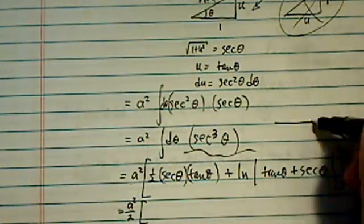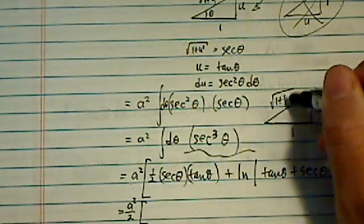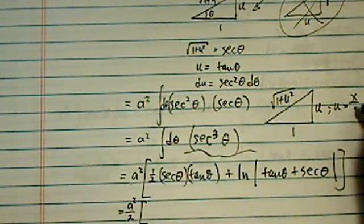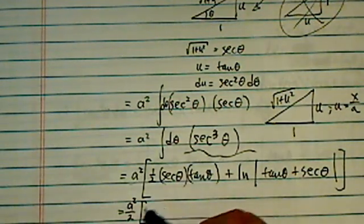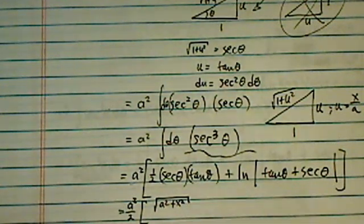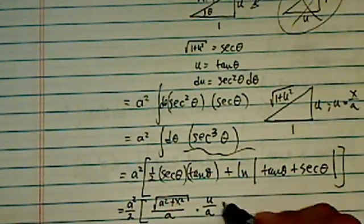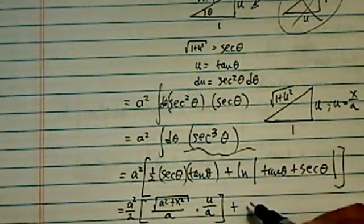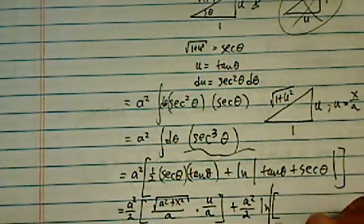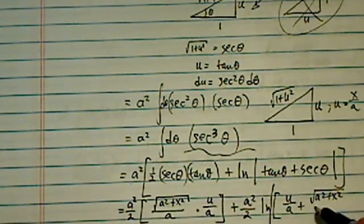Now let's go back to our little triangle here. So we have u here, one, one plus u squared. And now remember u was in before when we substituted it was x over a. So I'm going to put everything back in there. So I have one half here, I have radical root of a squared plus x squared over a times u over a, that's one of them, plus a squared over two here, natural log of u over a plus a squared plus x squared over a.